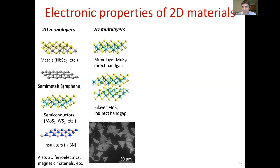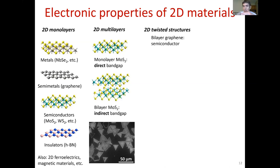Stacking changes properties quite a lot across many materials. Putting a layer of graphene on another gives bilayer graphene with a changed band structure. But the way you stack the second layer also matters. Regular AB-stacked bilayer graphene is a semiconductor, but if you take two layers and slightly twist one relative to the other before stacking, you get a periodic moiré structure whose periodicity depends on the twist angle theta.